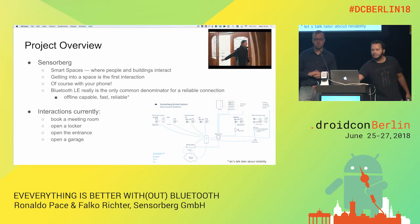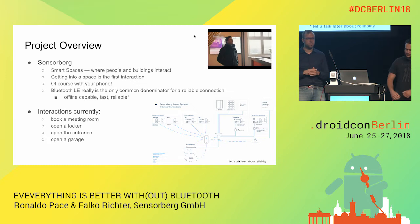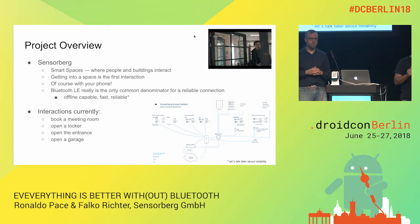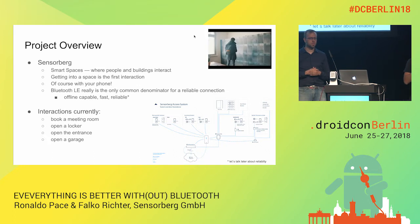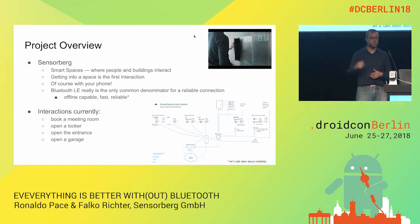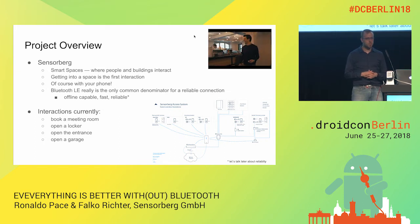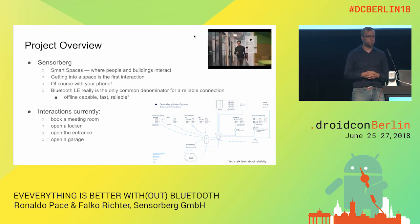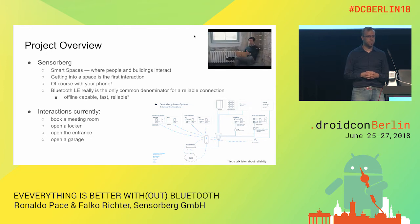We at Sensorberg want to enable spaces so people can interact with them. One of the first things you need to do is get into a building or get into a room — from A to B. So the first thing we did was access control. And of course, we did it with a phone, so you can use your Android phone to open doors or other things.